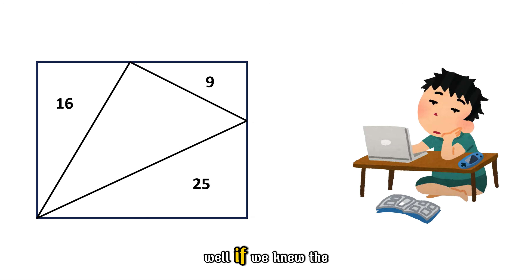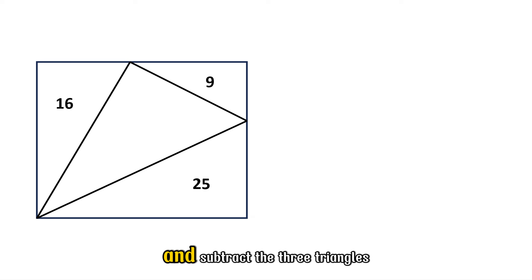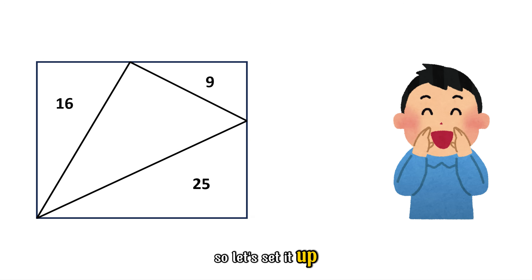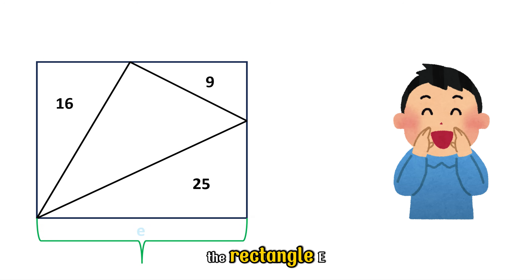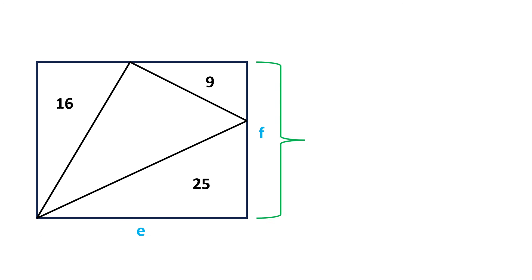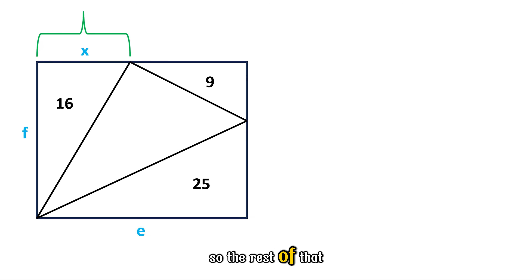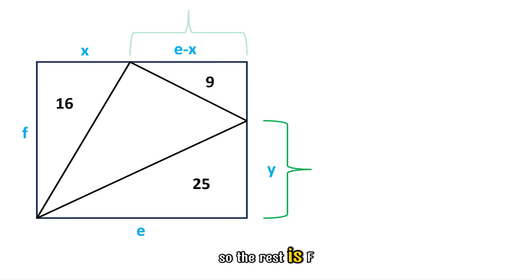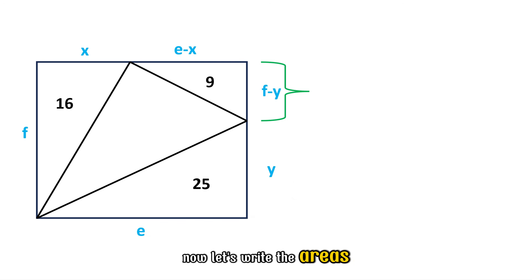Now, some people might say: well, if we knew the length and width of the rectangle, we could just find the total area and subtract the three triangles we already know. That would work, but the problem is we don't actually know the dimensions. So let's set it up. Let's call the length of the rectangle E and the width F. Along the length, let's mark off a segment X, so the rest of that side is E minus X. Along the width, let's mark off a segment Y, so the rest is F minus Y.